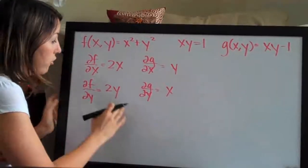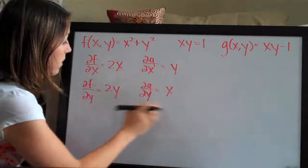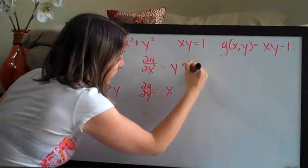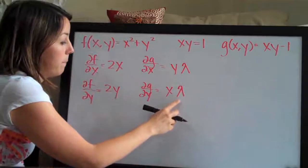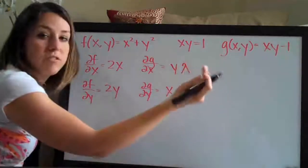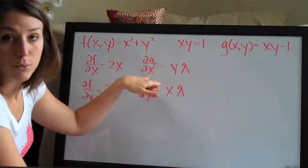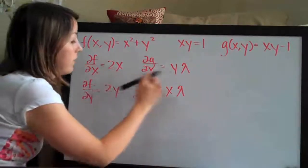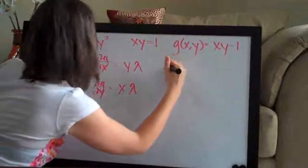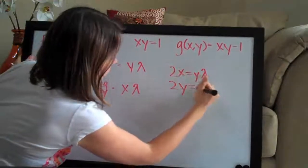Now that we've taken partial derivatives of both f and g with respect to x and y, we set them equal to each other. But first, we add lambda to the end of the g partial derivatives. So we tack lambda onto both of them. Since these two are partial derivatives with respect to x and those two with respect to y, we set them equal: 2x equals y·lambda, and 2y equals x·lambda.